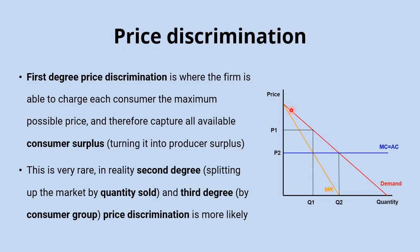Second degree price discrimination is when you split up the market by quantity sold. An example is an internet plan that charges a higher rate for data used over a certain amount — you pay a lower rate up to a certain number of gigabytes, and then the price per gigabyte increases when you use more.